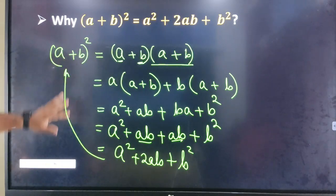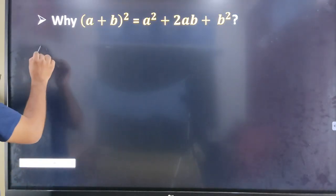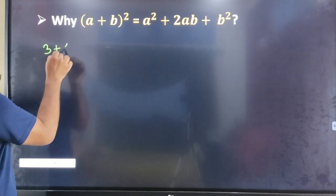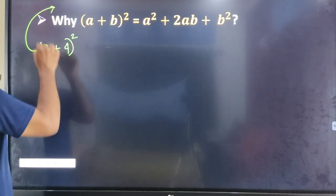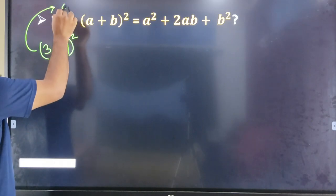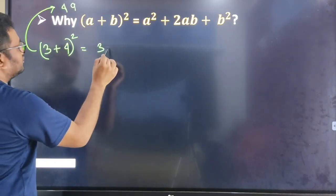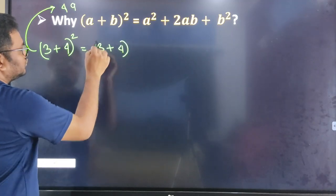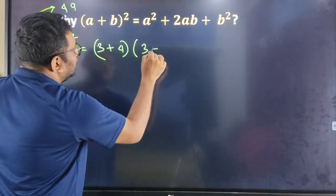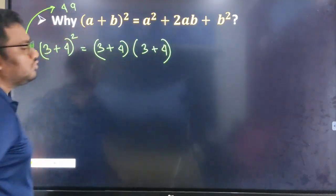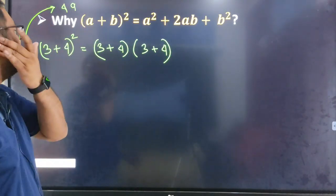Suppose number 8 — I know how to do 3 plus 4. 3 plus 4 means 7, 7 square means 49, so I don't do that — I can use the formula. 3 plus 4 means 3 plus 4 into 3 plus 4. This is a very easy topic.